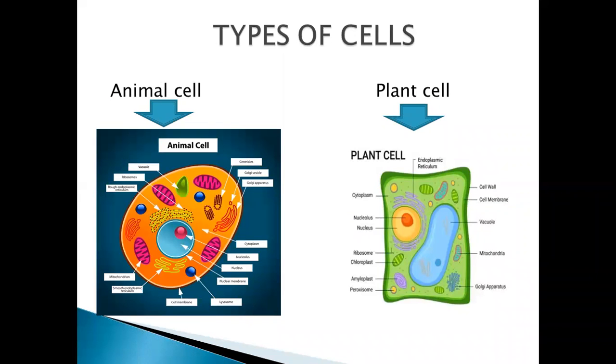If we talk about the types of cells, we have two types of cells on the basis of structure, functions and the organelles that are present inside the cell. One is animal cell which is present in animals and also in humans. The other type of cell is plant cell which is purely present in plants.